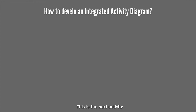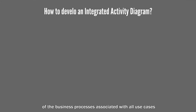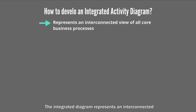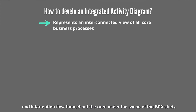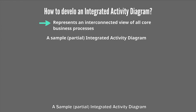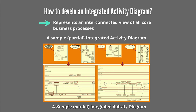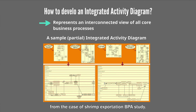Next, the process analysts should develop an integrated activity diagram. This is where process analysts work together to integrate all activity diagrams of the business processes associated with all use cases defined earlier into a single integrated activity diagram. The integrated diagram represents an interconnected view of all core business processes. It illustrates relationships between core business processes, process participants, and information flow throughout the area under the scope of the BPA study, as shown in the partial integration from the Shrimp Exportation BPA study case.